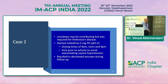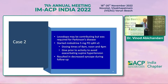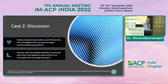Levodopa was suspected as a contributing factor to this patient's syncope, but it could not be discontinued as it was required for Parkinson's disease. The patient was offered midodrine 5 mg every four hours three times a day, with timings at 8 AM, noon, and 4 PM to cover the active period, and this resulted in decreased syncope during follow-up.